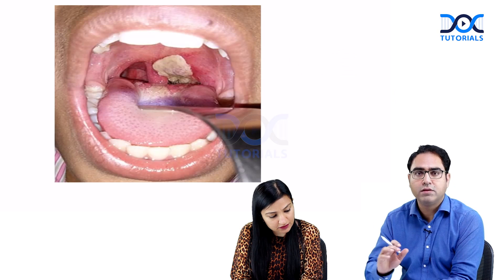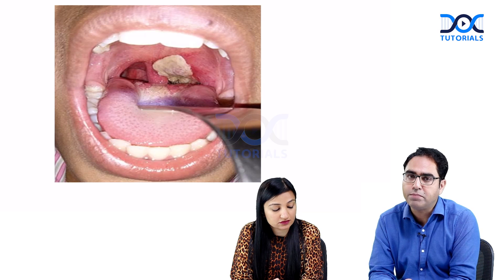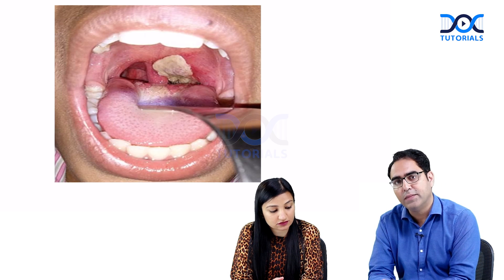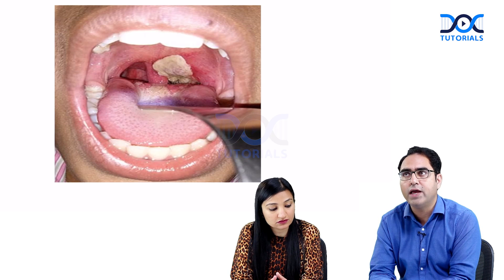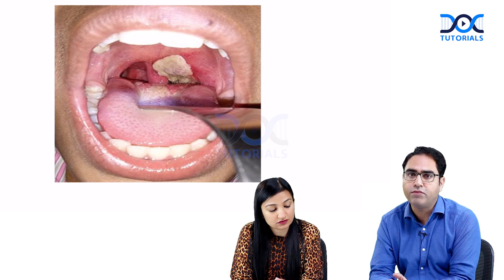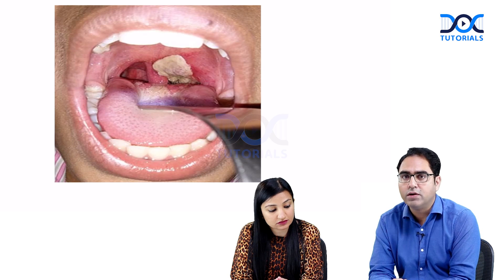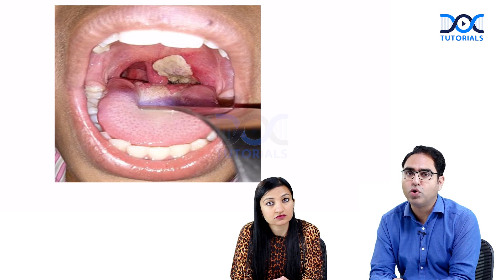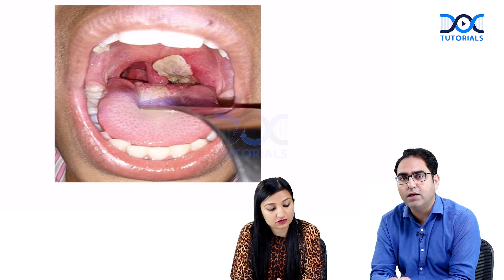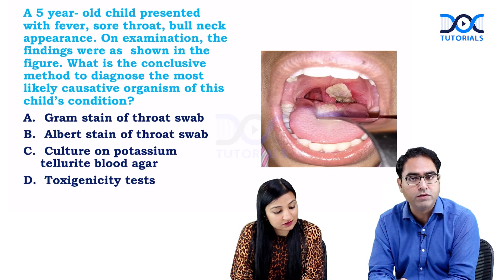If you look at this oropharyngeal examination, you can see a whitish membrane, and there is a high index of clinical suspicion of diphtheria. The child is five years old, there is fever, there is bull neck — all the points are favouring the clinical diagnosis of diphtheria. However, we need to prove it. So we take a throat swab and send it to the microbiology colleague. I will request Dr. Mamata Java to enlighten us about the right choice.